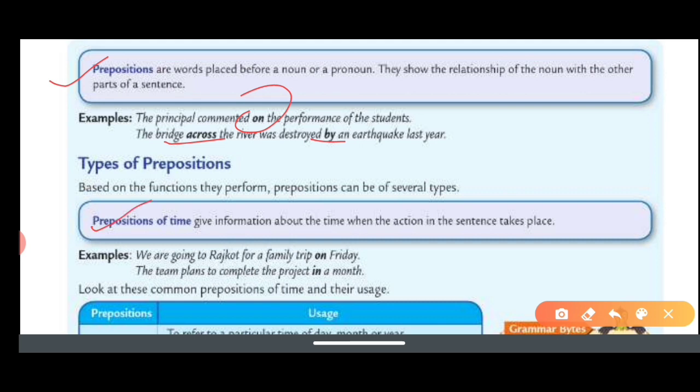Types of prepositions: Prepositions of time give information or knowledge about the time in the sentence. Like, we are going to Rajkot for a family trip on Friday. On Friday refers to the time when you are going.